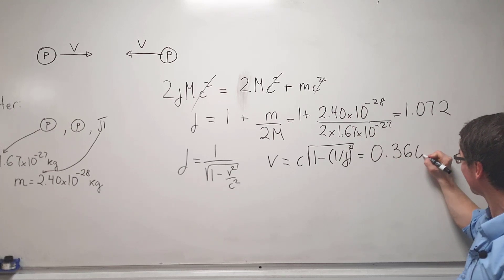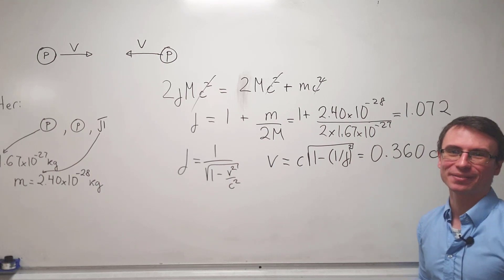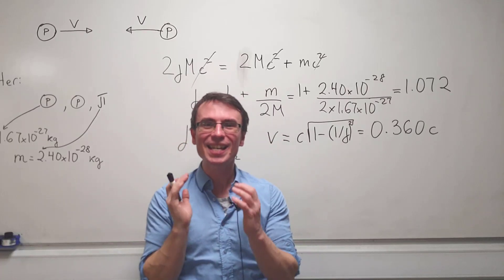0.360 times c, or around 36 percent of the speed of light. Just think about how different this is to a classical collision.